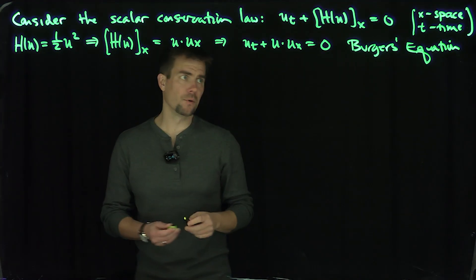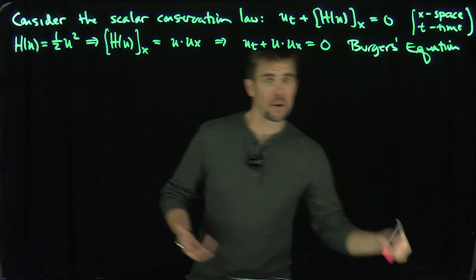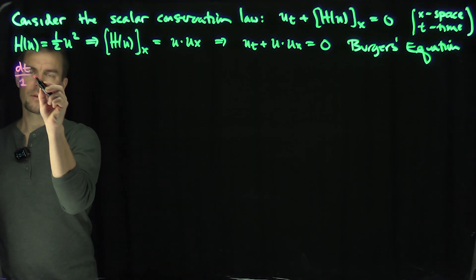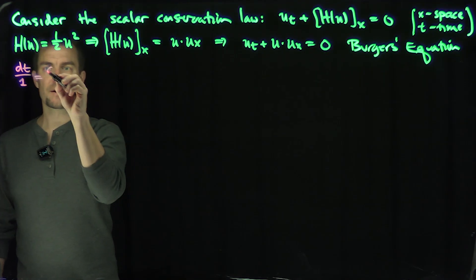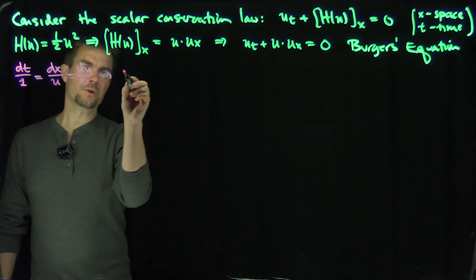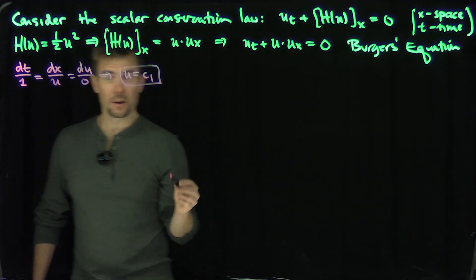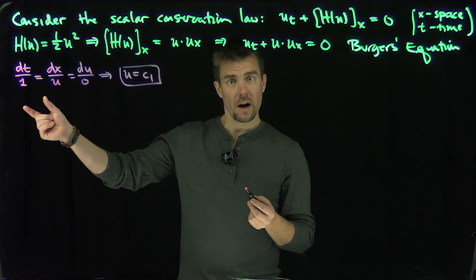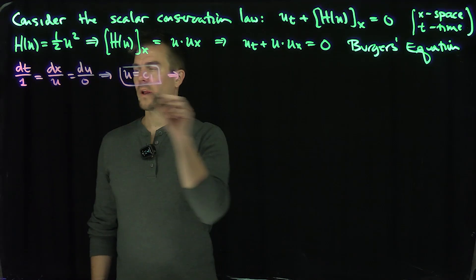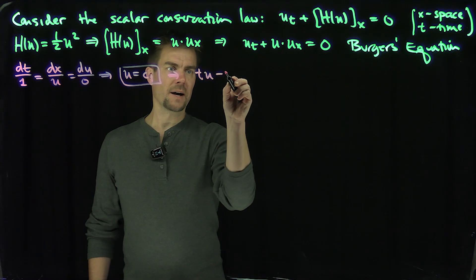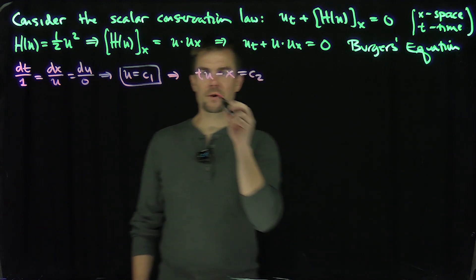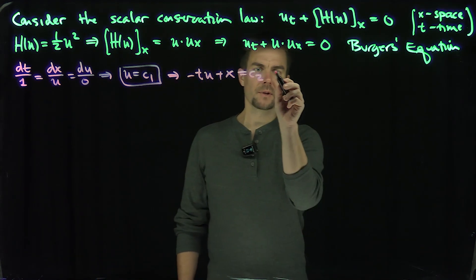When we solve Burgers' equation with the method of characteristics, what do we say? We say, okay, I have dt over 1, these are my characteristic surfaces. dx over u and then du over 0. And this forces, of course, u to be constant, u to be c_1. In other words, u is going to be constant along the characteristics.